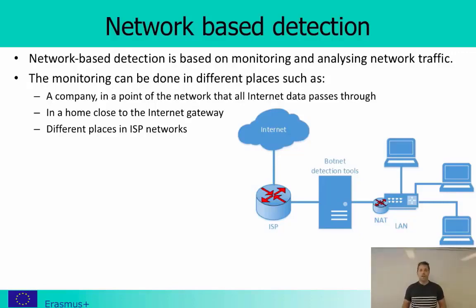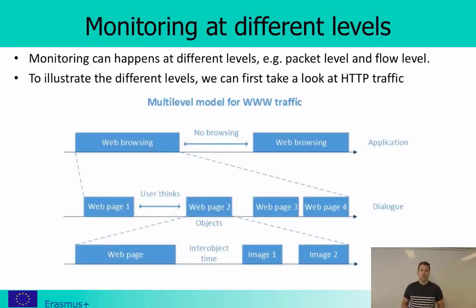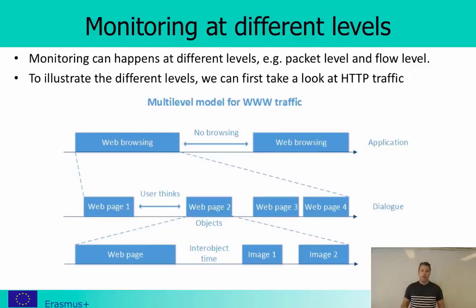It is important to understand what we want to analyze, because we can do this at different levels. We can do it at packet level — looking at each individual packet to see if it's malicious. Or we can do it at flow level — looking at each flow to see if the flow is malicious. These are different approaches with different kinds of information available. To illustrate, we can look at a multi-level model for worldwide web traffic.